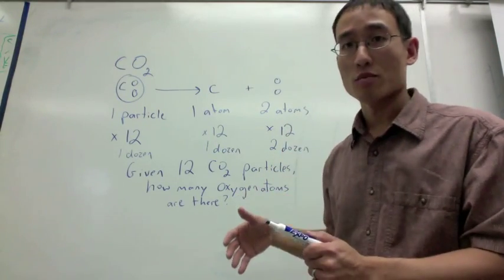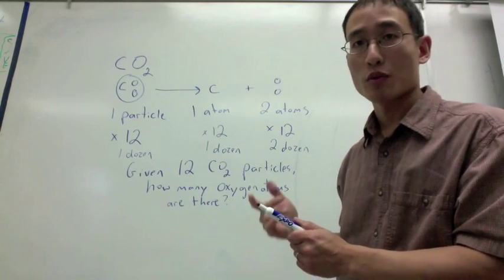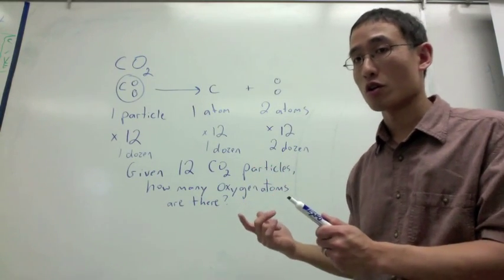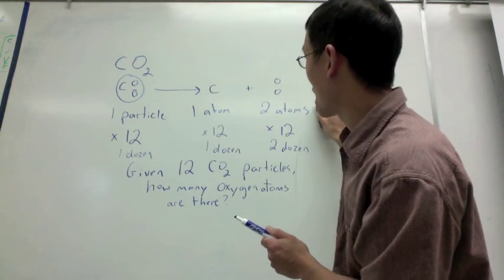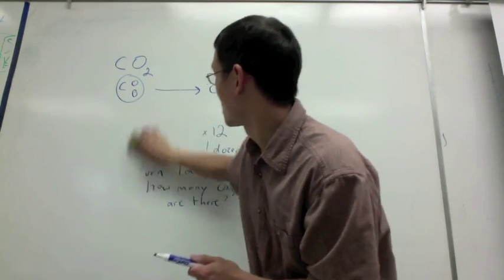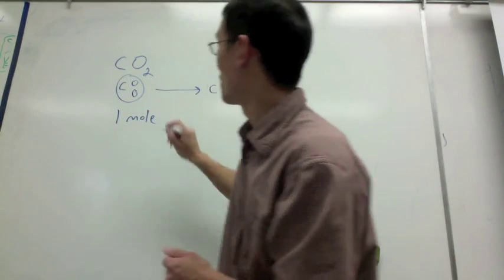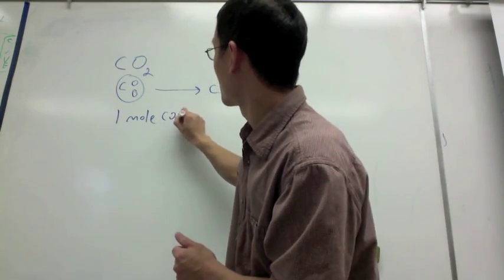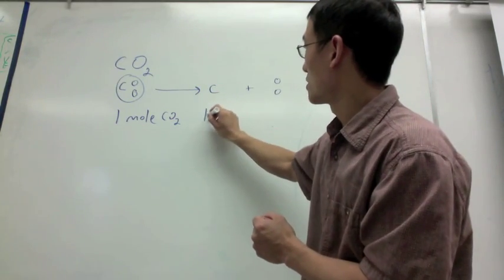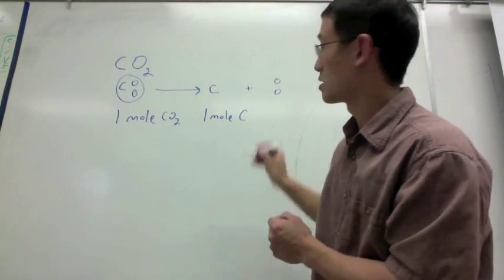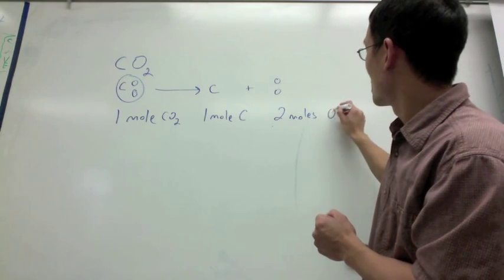Now, how does this relate to moles? Well, I want to scale this up once again to moles. So instead of multiplying by 12, I'm multiplying by Avogadro's number, or 6.02 times 10 to the 23rd. And so, instead of now having one particle, let's say I have one mole of these. So one mole of CO2. If I break that apart, that's going to give me a mole of carbon and two moles of oxygen.